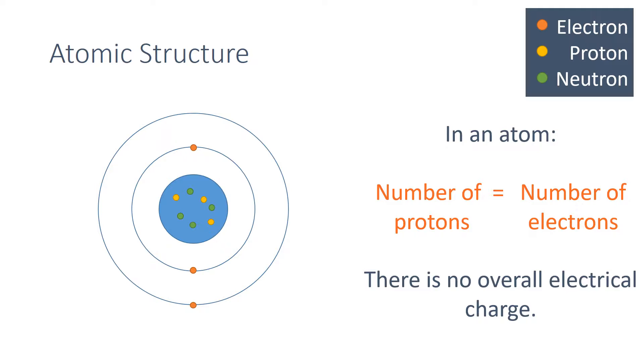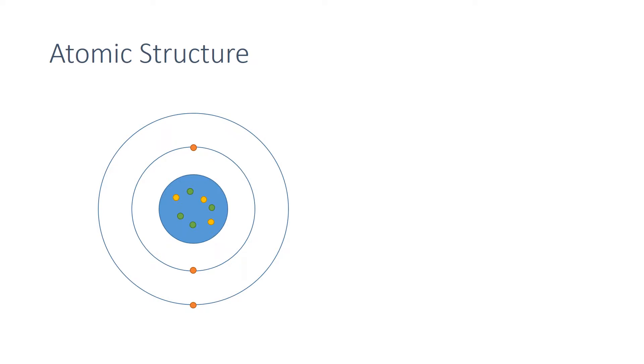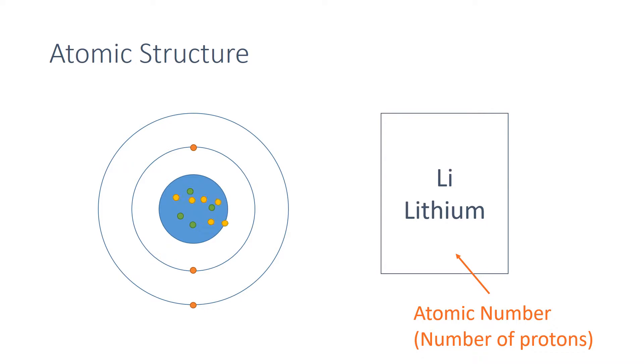All atoms of a particular element have the same number of protons, and you can see this on the periodic table. This is lithium. All lithium atoms have three protons, and we call the number of protons the atomic number.